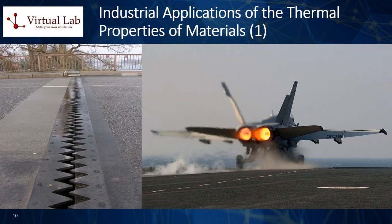The thermal properties of materials are crucial in a wide variety of industrial applications, affecting both the performance and safety of numerous products and systems. Here are a few examples. 1. Electronics. Thermal conductivity is an important factor in electronics. Materials with high thermal conductivity are often used in heat sinks to help dissipate heat from electronic devices and keep them operating at safe temperatures. 2. Construction. The thermal properties of materials used in construction significantly affect the heating and cooling efficiency of buildings. For instance, materials with low thermal conductivity, good insulators, such as fiberglass, are used in walls, roofs, and windows to limit heat transfer, keeping buildings warm in the winter and cool in the summer.